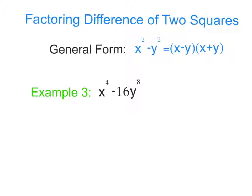Our third example, again, is a little bit tricky. We see those big exponents again, but we know how to do that. So we have half of 4 is 2, so we have x squared minus 4y to the 4th and x squared plus 4y to the 4th.